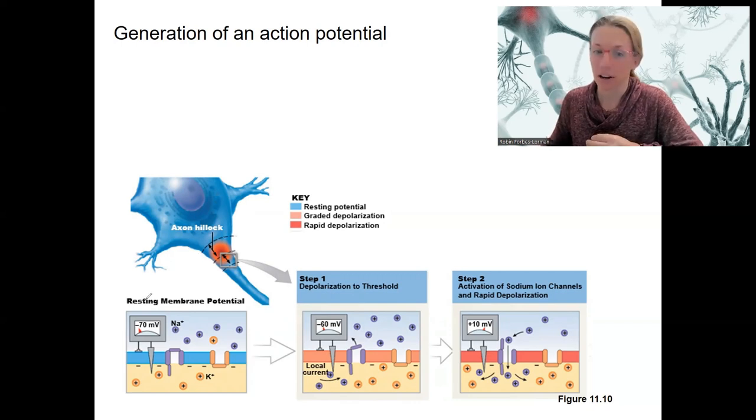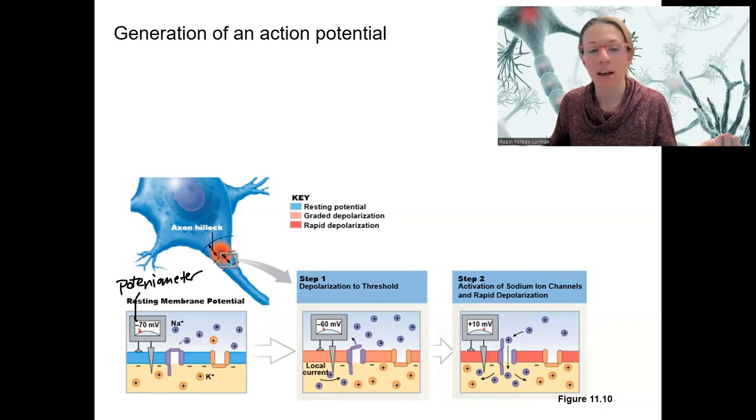Recall the neuron at rest is at minus 70. So this is our potentiometer, or voltmeter. We're measuring the difference in the voltage between outside and inside the cell. At rest, these channels are closed, and we're maintaining about minus 70 for neurons, a little bit lower for muscle cells.